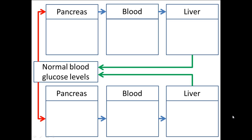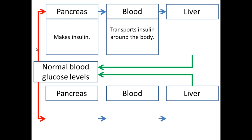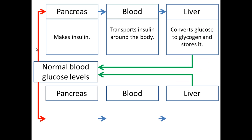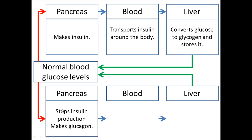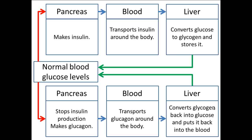Here we've got our negative feedback loop, and you can see just what controls or regulates blood sugar. If we have an increase in blood sugar levels, the pancreas makes insulin. The blood transports the insulin around the body where it's affected by the body cells and also the liver, where it's converted into glycogen, therefore reducing blood sugar. If it's too low, the pancreas stops making insulin and starts to make glucagon instead. Glucagon is transported around the body and the liver converts glycogen back into glucose and puts it back into the bloodstream, which overall raises blood sugar levels.